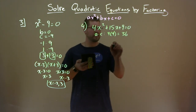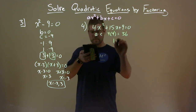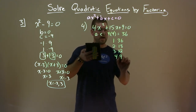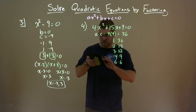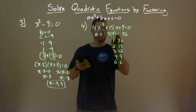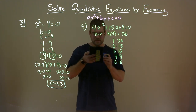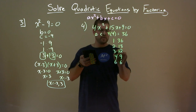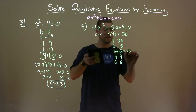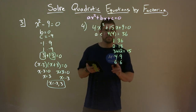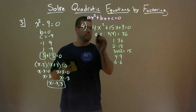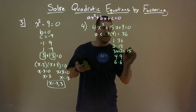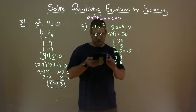Now we find the factors of 36: 1 times 36, 2 times 18, 3 times 12, 4 times 9, and 6 times 6. We want to see which pair adds up to be 15. That's 3 and 12, since 3 plus 12 equals 15. Those are the two numbers we're going to use.